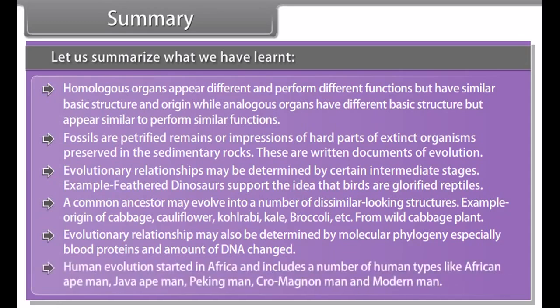Charles Darwin proposed the theory of natural selection for organic evolution, stating that only useful continuous variations help in evolution and natural selection selects only the best adapted individuals from a heterogeneous population. The most accepted theory of the origin of life is the chemosynthetic theory, proposed by Oparin and Haldane, stating that primitive life originated in water about 4.2 billion years ago by chemical evolution in a primitive reducing environment, experimentally supported by Miller and Urey. Speciation involves the origin of new species from pre-existing species and may be gradual or instantaneous.